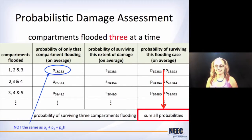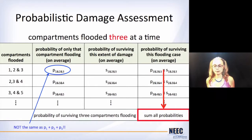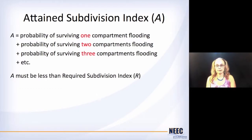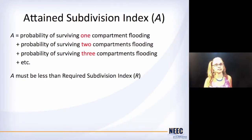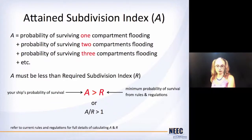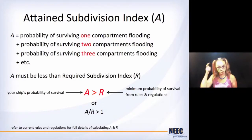All of these tables — at wherever you work or whatever school you're at, somebody's probably got a version of this already, so you can get that and then tweak it for your ship and what classification it falls under. The whole goal of the big giant tables is to come up with this one number: the attained subdivision index. You take all the probabilities that you just calculated and sum them all up, and that's got to be bigger than this required subdivision index R. So you calculate your subdivision index for your ship, which is A, and that's got to be greater than R — or another way to think about it is A divided by R has got to be greater than one.